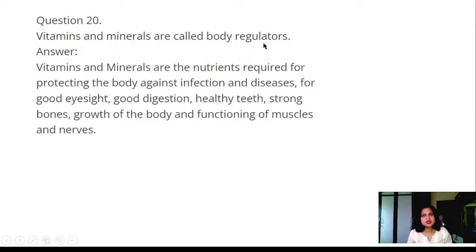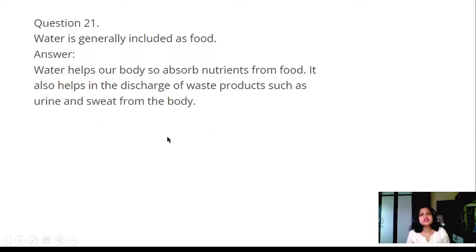Question 20: Vitamins and minerals are called body regulators. Answer: Vitamins and minerals are nutrients required for protecting the body against infection and diseases, for good eyesight, good digestion, healthy teeth, strong bones, growth of body, and function of muscles and nerves. Question 21: Water is generally included as food. Answer: Water helps our body to absorb nutrients from food. It also helps in the discharge of waste products such as urine and sweat from the body.